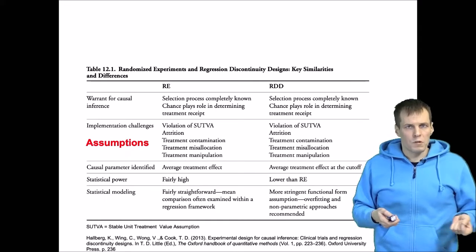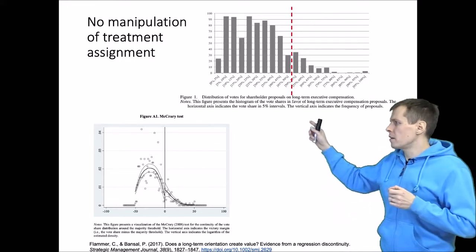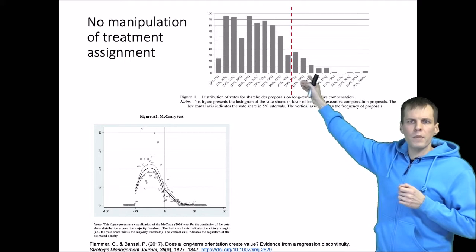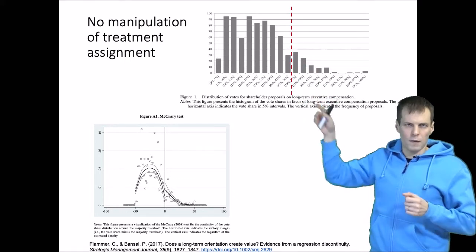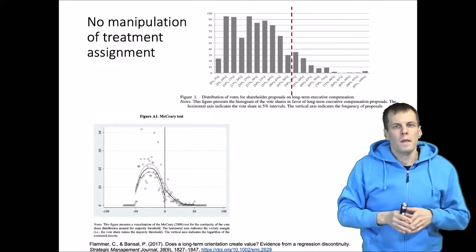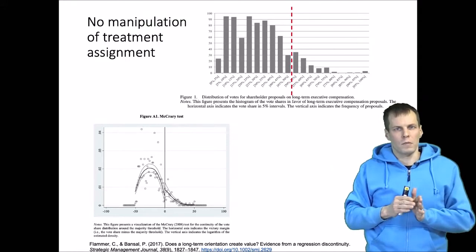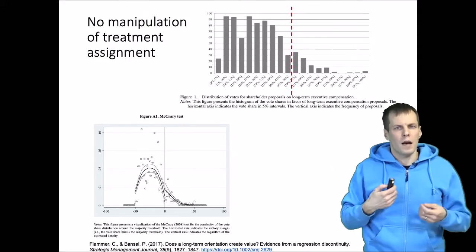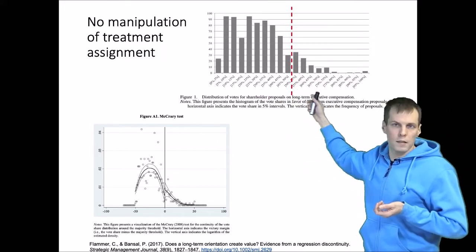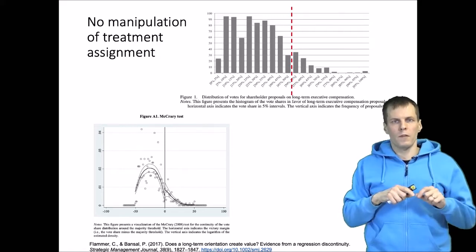Let's look at how assumptions are investigated using Flammer's paper. One useful check is whether there is a difference in the distribution of whether proposals are accepted or not around the threshold. If there is a big peak just after the threshold — similar to how p-values in published articles peak just after 0.05 — that's evidence of people gaming the system to get just above the threshold, which is a problem for this technique. This can be assessed by plotting frequencies of different values and using the McCrary test, a formal test for whether there is a peak just before or just after the treatment assignment.